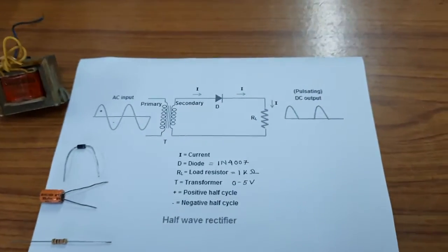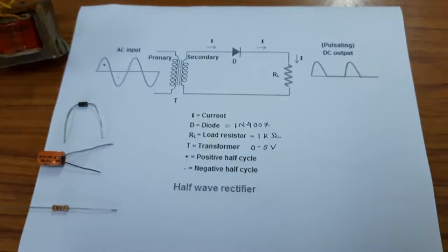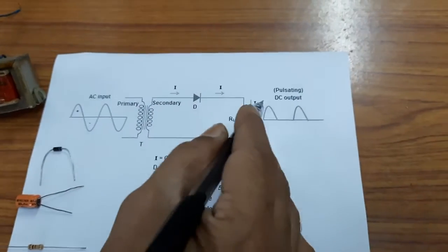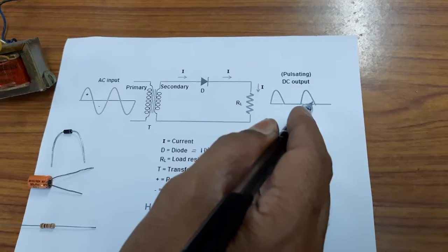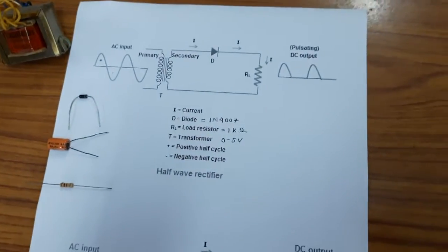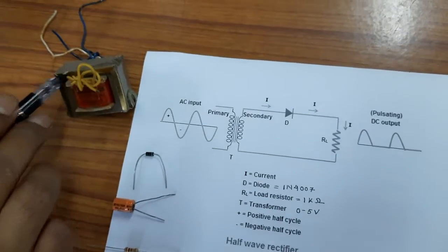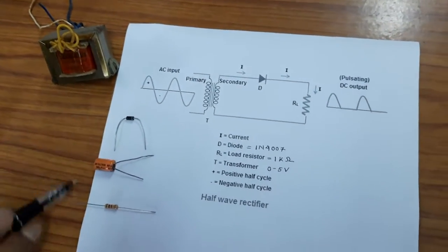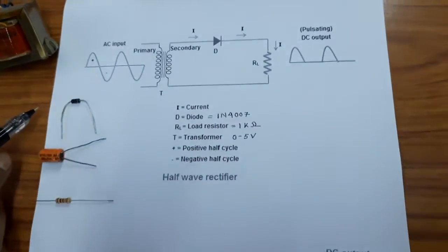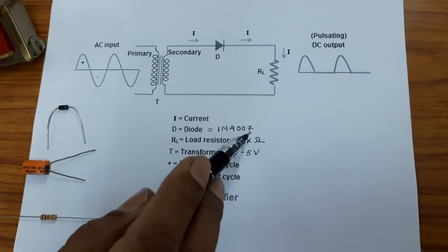A half wave rectifier is a type of rectifier which converts the positive half cycle of the input signal into a pulsating DC output signal. The half wave rectifier circuit is made up of an AC source, step down transformer, diode, and resistor. The value of the resistor is 1 kilo ohm, and the diode specification is 1N4007.